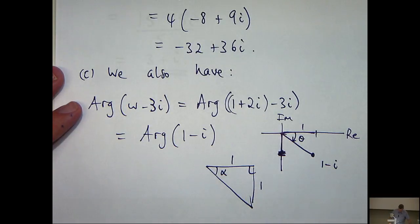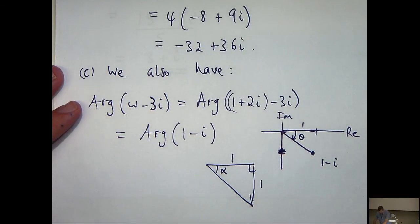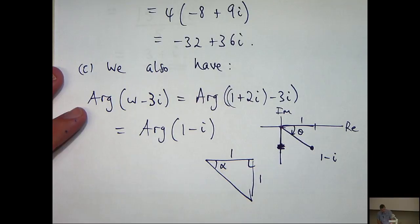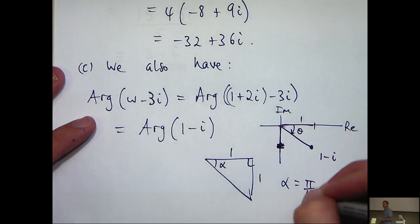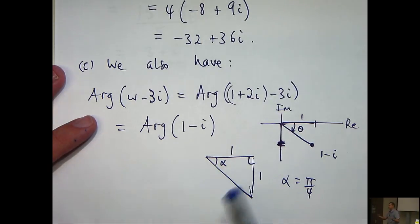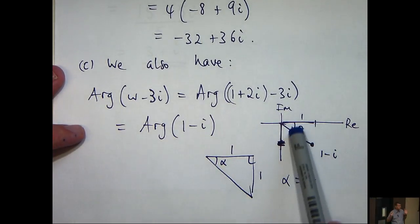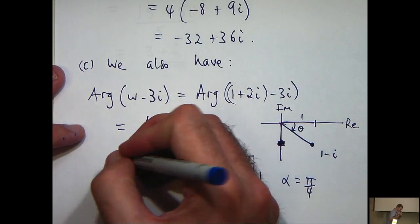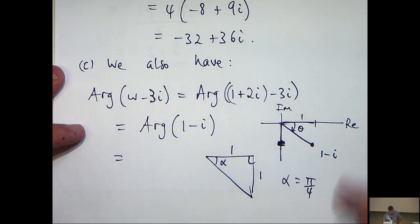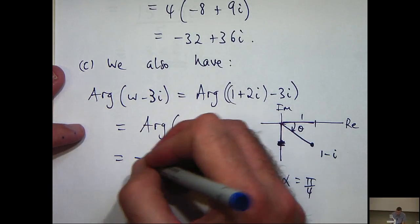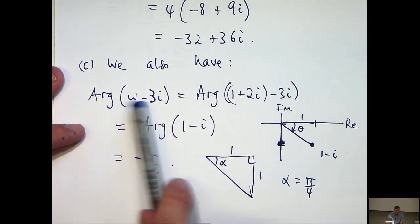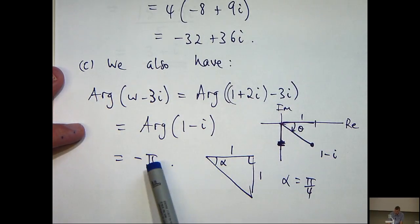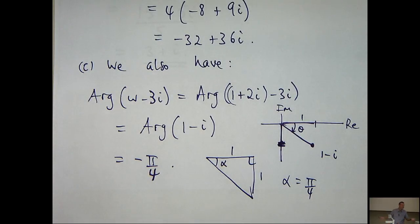So if I use tan inverse alpha, I know that's going to be 1. So in this, alpha is just pi on 4. Just using trig. Okay. But remember, we're turning here in a clockwise fashion. So my answer is actually going to be negative. So the principal argument of this complex number here is negative pi on 4.